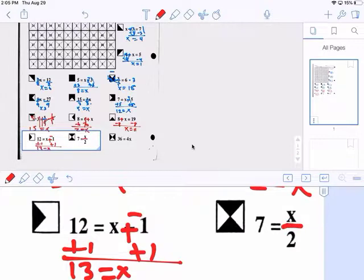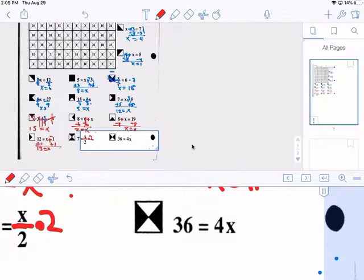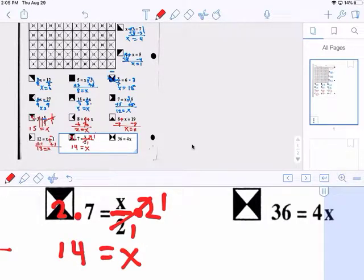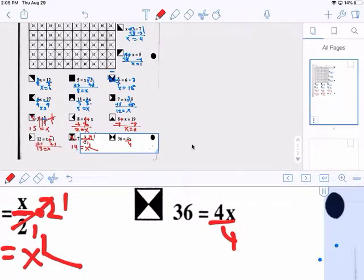This is divide by 2. Opposite divide is times 2. Cross cancel. 1 and 1 is 1. And X equals to 14. Divide by 4 because it's multiplying. X is 9. That's how you do that. It should be easy. I think that's every problem there is.